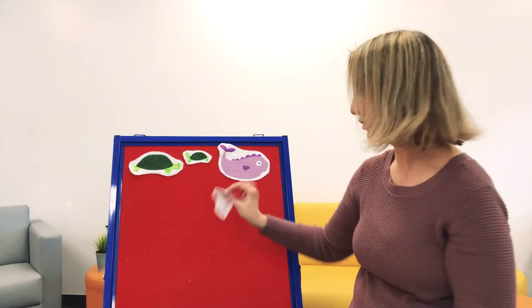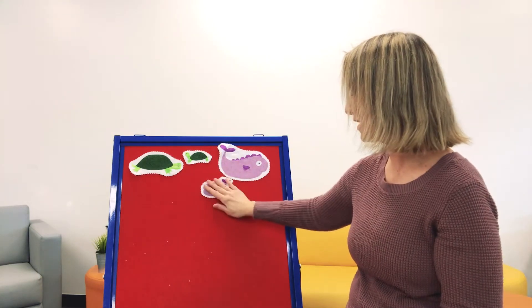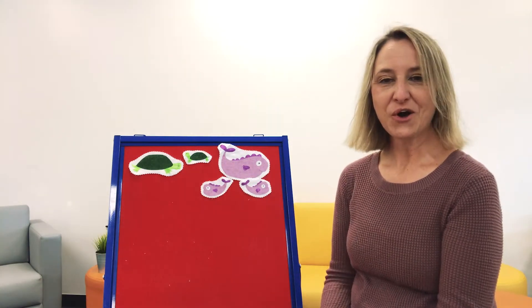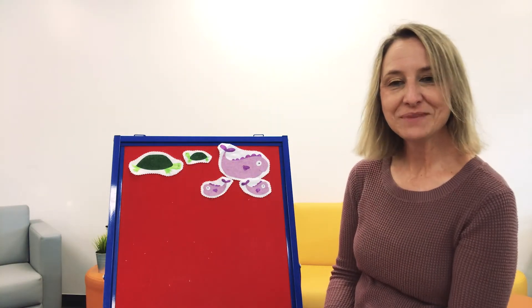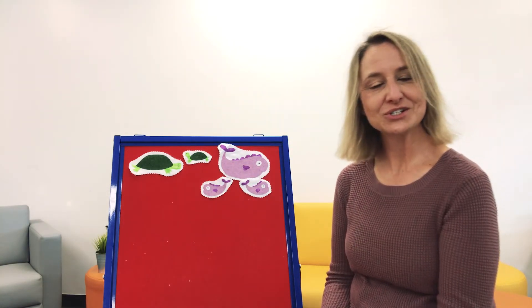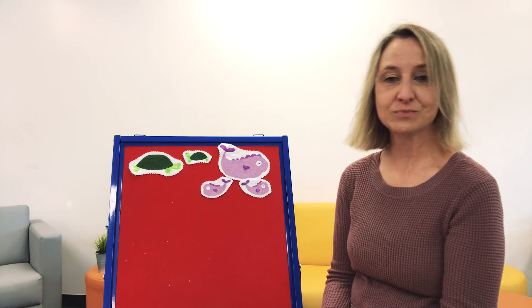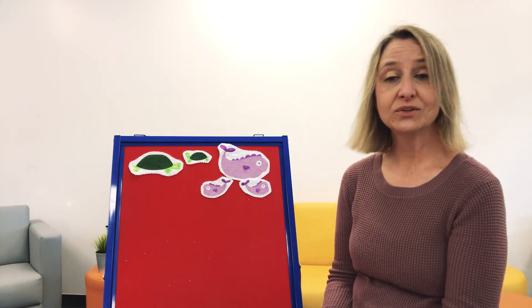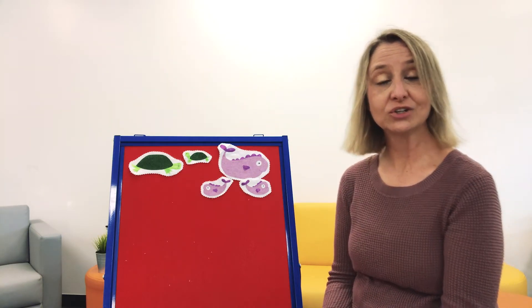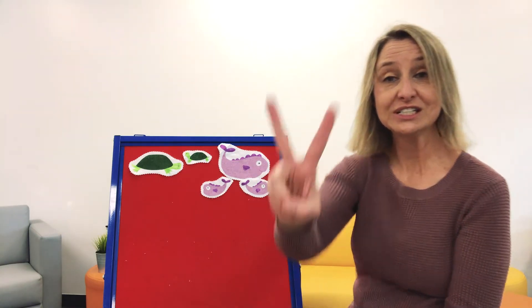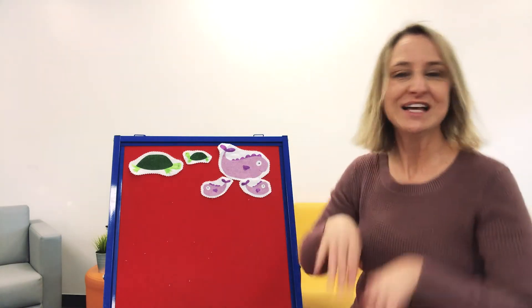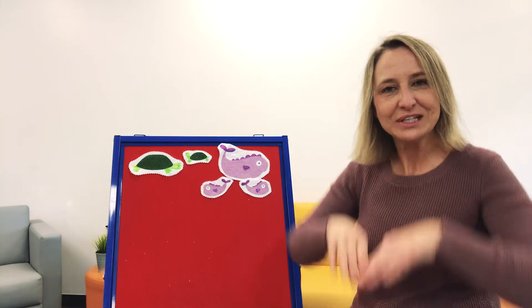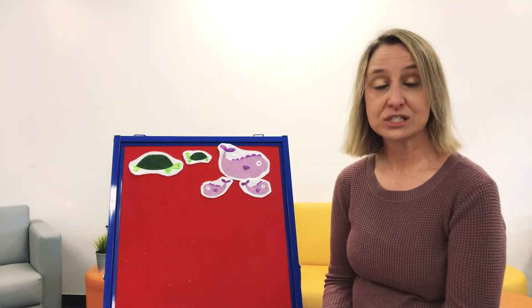Now we have Mother Fish and her little fishies two. One, two. Over in the meadow where the stream runs blue lived old Mother Fish and her little fishies too. Swim said the mother, we swim said the two.